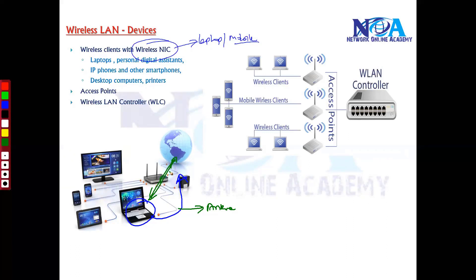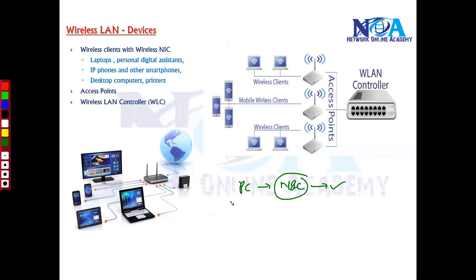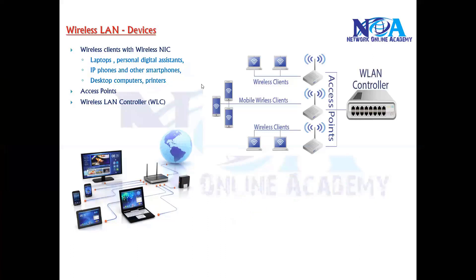If you're using PCs, you can add an additional external NIC card on specific slots. For laptops or smartphones, they have an inbuilt or integrated NIC on the chips or motherboard. Nowadays, even IP phones and printers support wireless features, allowing you to connect them to the network without using a wire. The end devices must support wireless options or a wireless NIC so that they can be part of the network.